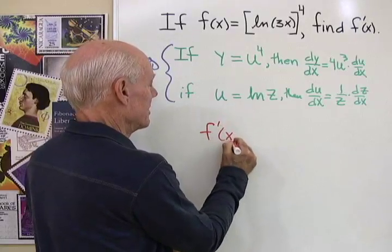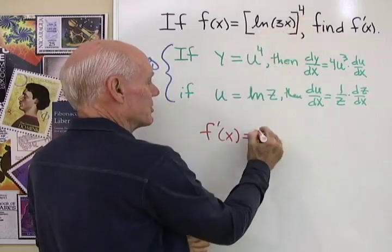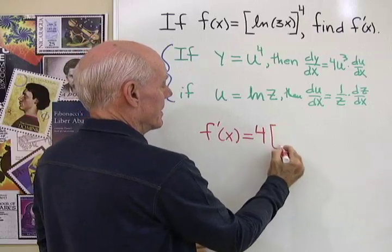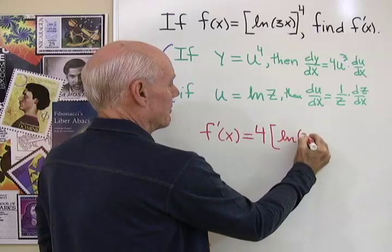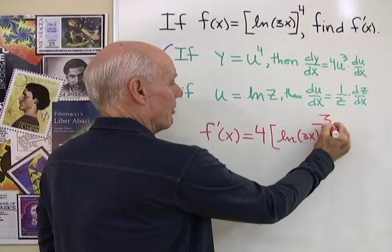f prime is going to be equal to u to the fourth power is going to be 4 times that base natural log 3x. I don't change the base to a power 1 less.